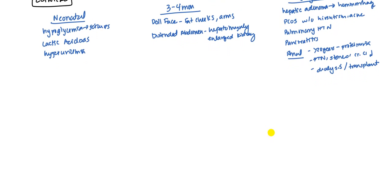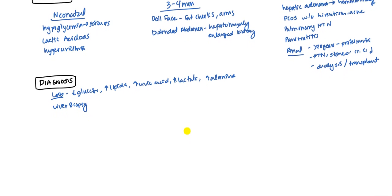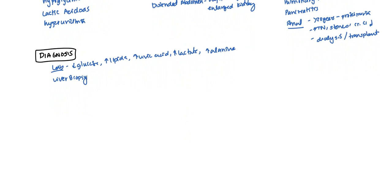So how do you diagnose it? It is generally a clinical diagnosis based on the symptoms. But when you do the lab work, the lab work we've already discussed. Low glucose with high lipids, you will also have the high uric acid and the high lactate. And you're going to have the high alanine. So these are the laboratory findings. However, if you do want to do a definitive diagnosis, you could do a liver biopsy. And you can look for the mutation.